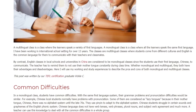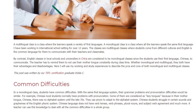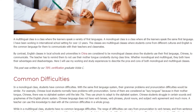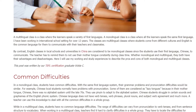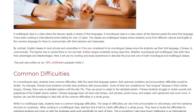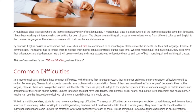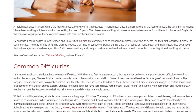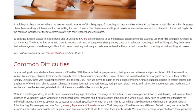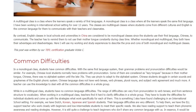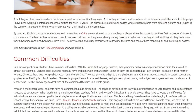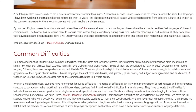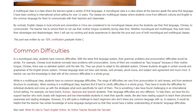In a monolingual class, students share common difficulties related to the same first language system — their grammar problems and pronunciation difficulties would be similar. For example, Chinese local students normally have problems with pronunciation. Some are considered to have 'lazy tongues' because Chinese had no alphabet system until the late 70s, when pinyin was introduced. Chinese students therefore struggle with certain sounds and graphemes of the English phonics system.